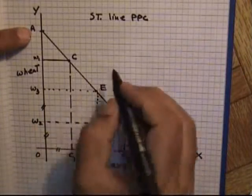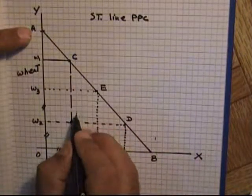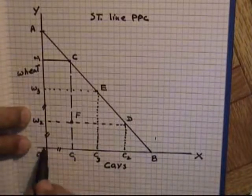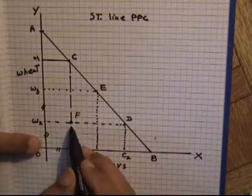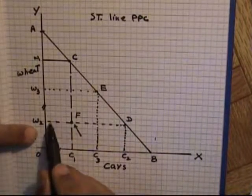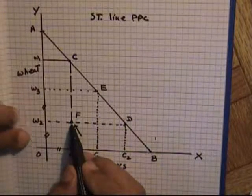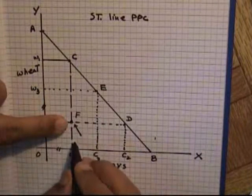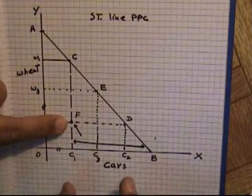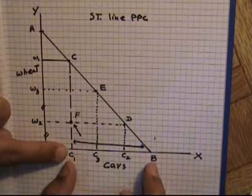Now, if the country decides to produce at a point inside the curve, let us say point F — where demand is very low and people need only OW of wheat and OC1 of cars — this situation may be comfortable for consumers because the country can easily produce the required amounts. However, this situation is not good for the economy, because resources including land, labor, and machinery remain unemployed. The country is capable of producing more, as shown by the distances C1B and the remaining wheat capacity.